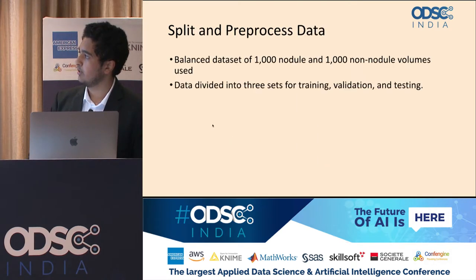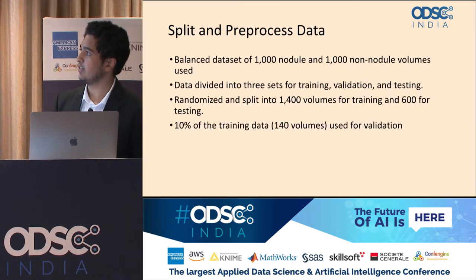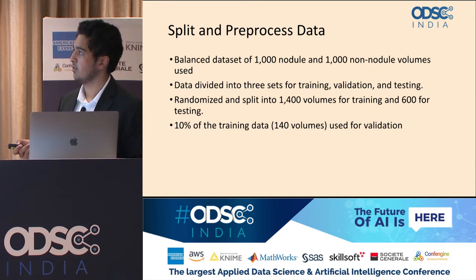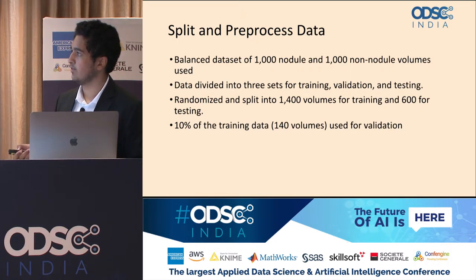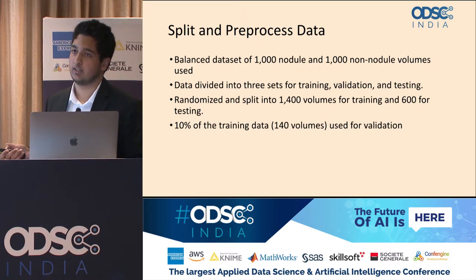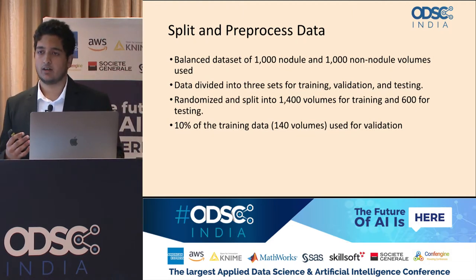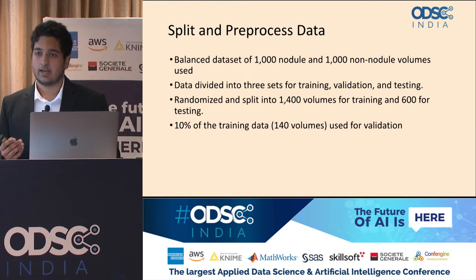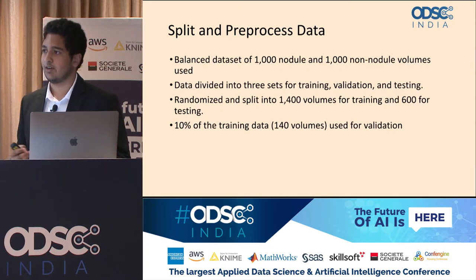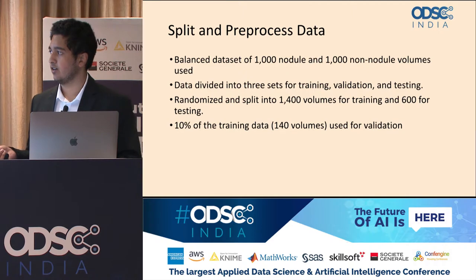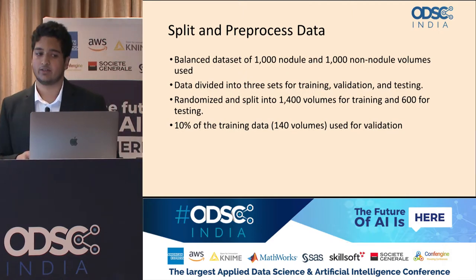Out of the 900 CT scans, we cut down to 1,000 nodule and 1,000 non-nodule volumes. This is divided into three sets: 1,400 images for training and 600 for testing, with the data completely randomized. Ten percent of the training data, or 140 volumes, were used for validation.